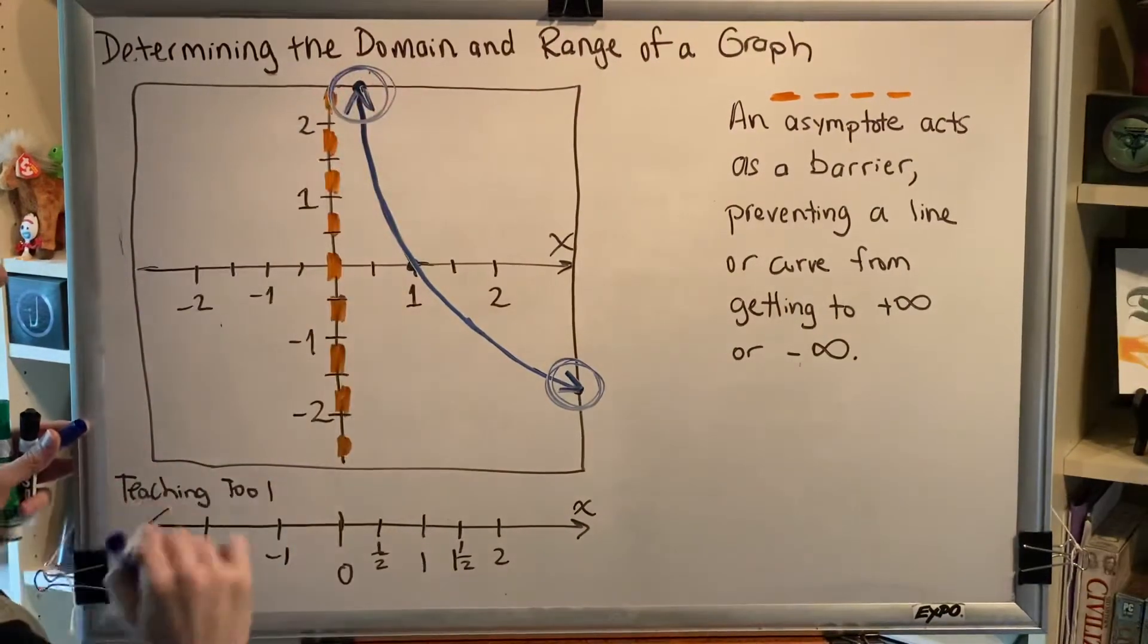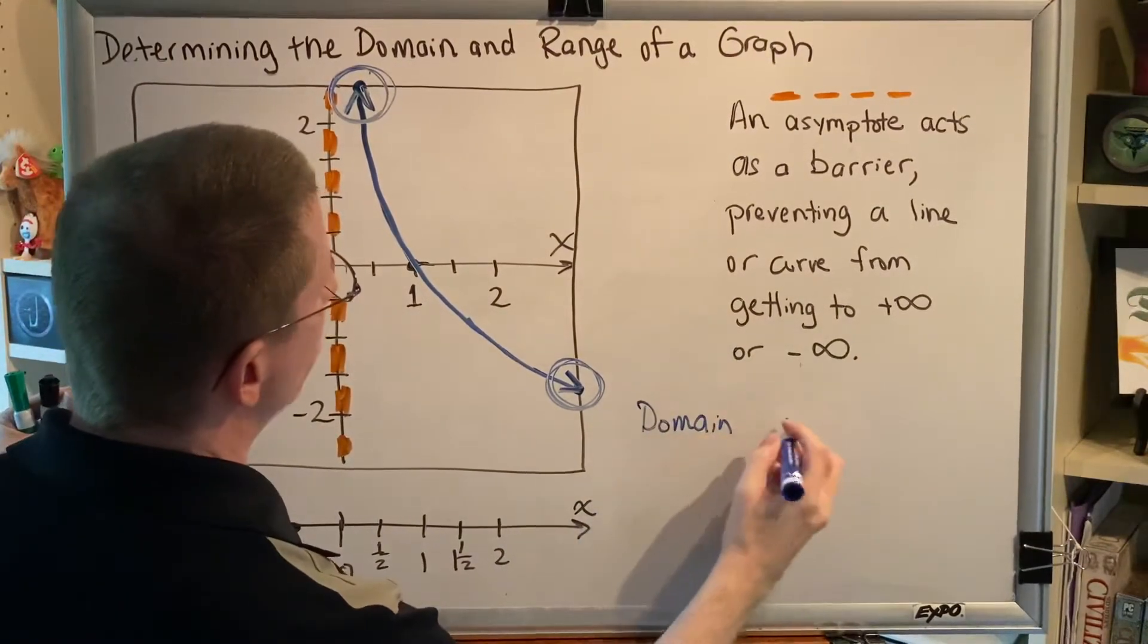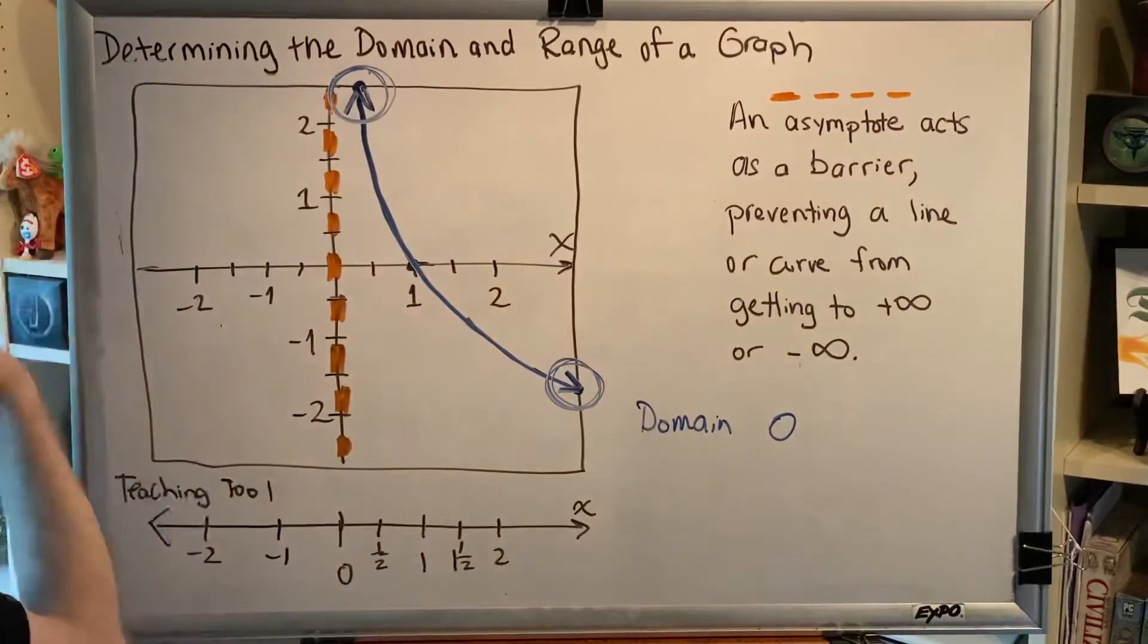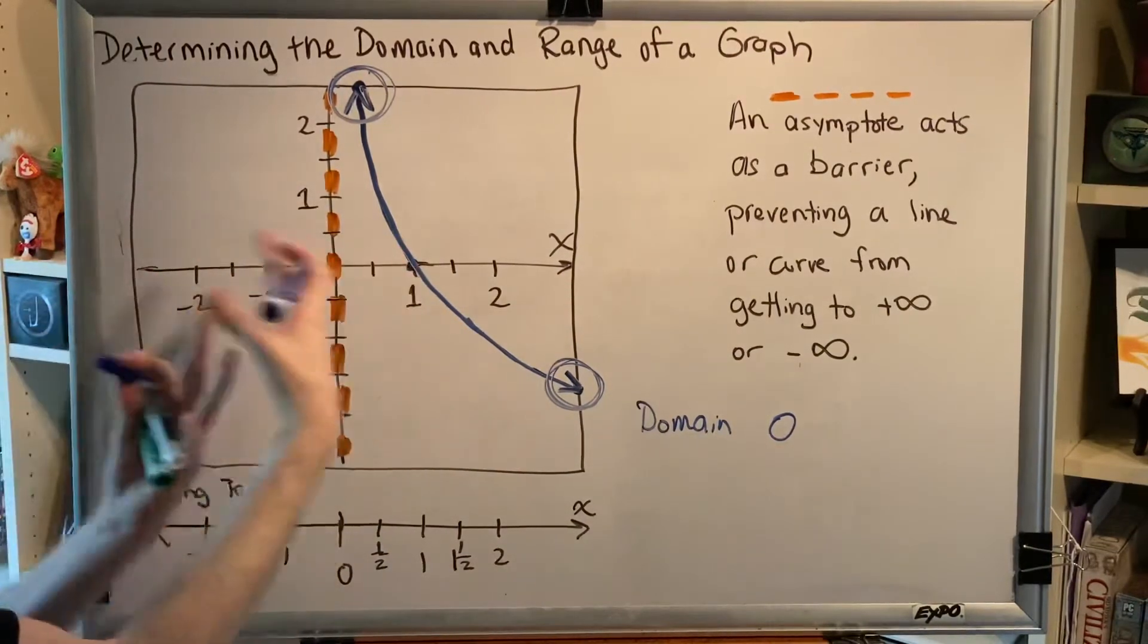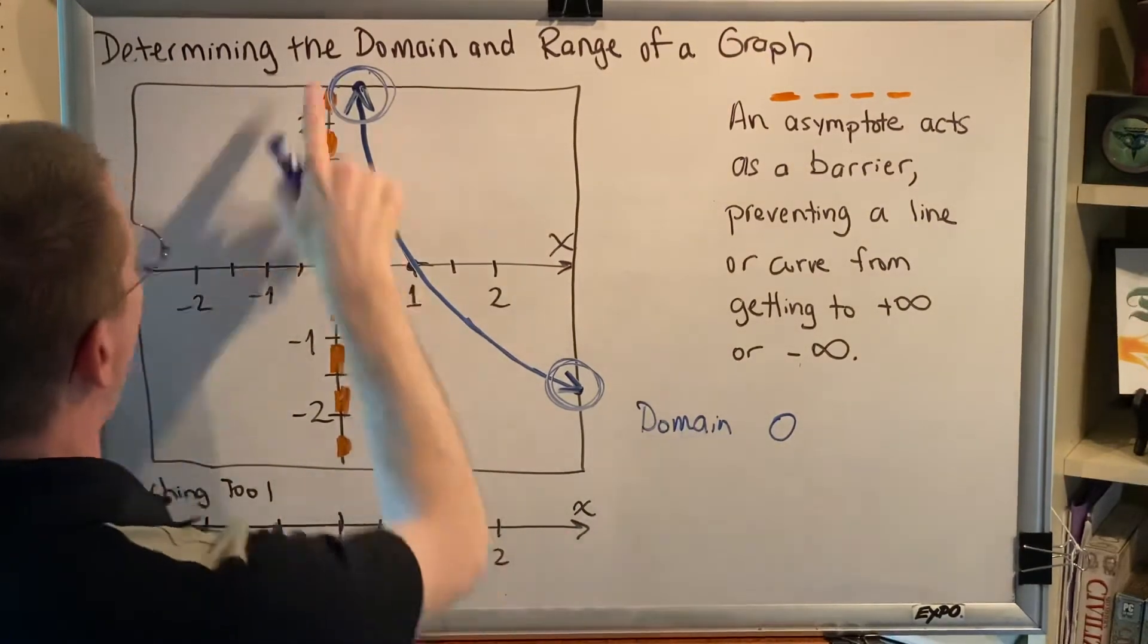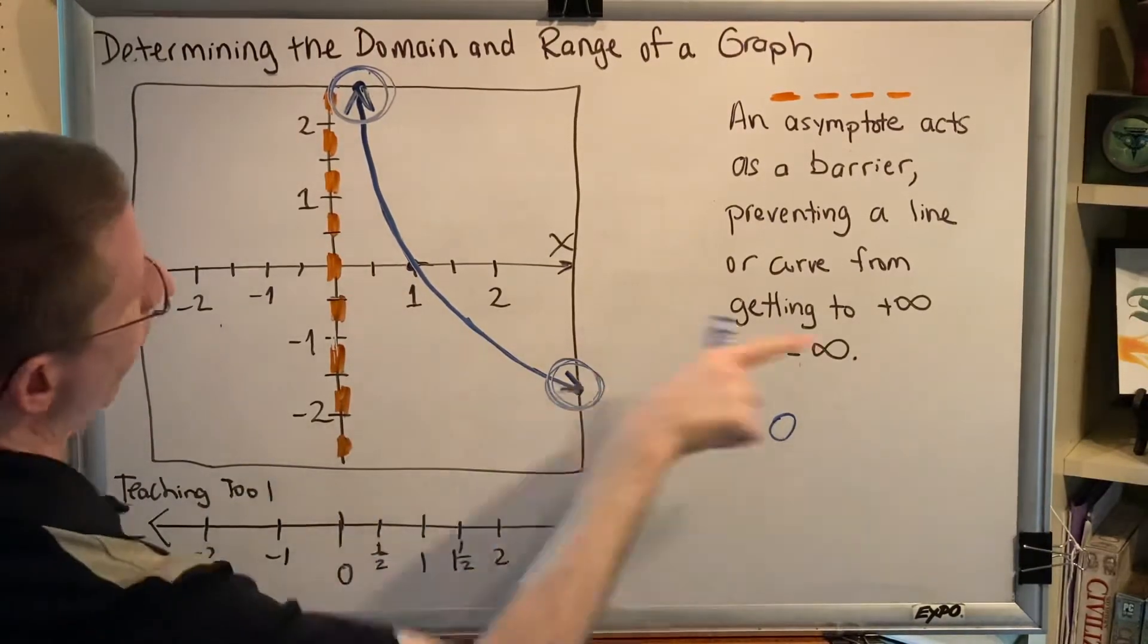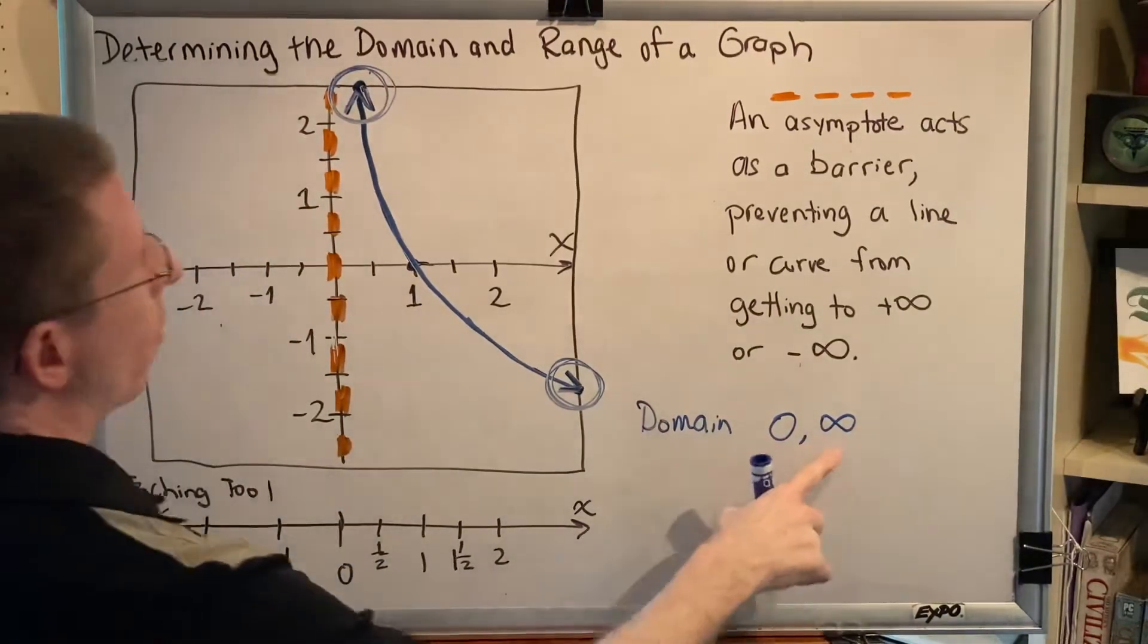The asymptote acts as a barrier preventing a line or curve from getting to infinity or negative infinity. In this case, it's trying to get to negative infinity but it can't because it is stopped by the asymptote at zero. Can this arrow get to infinity? The answer is yes. It's going to the right forever. There's no asymptote blocking its path, and so we can write infinity.